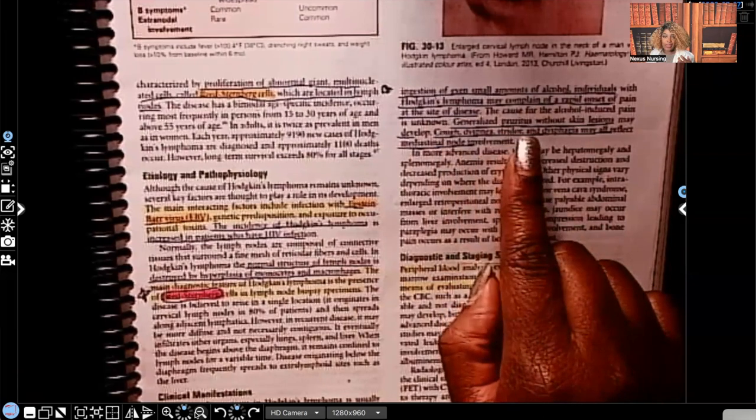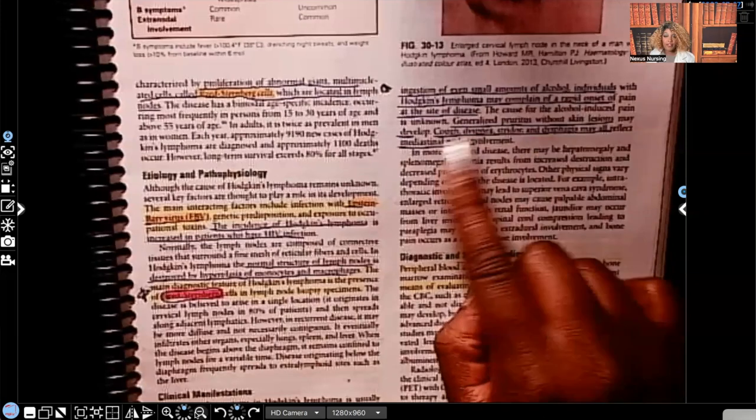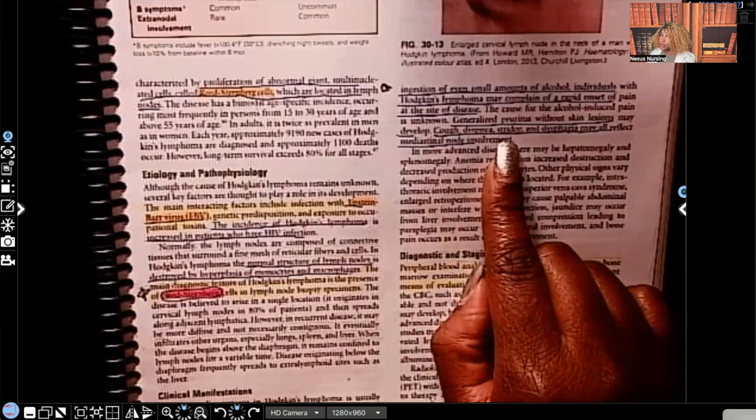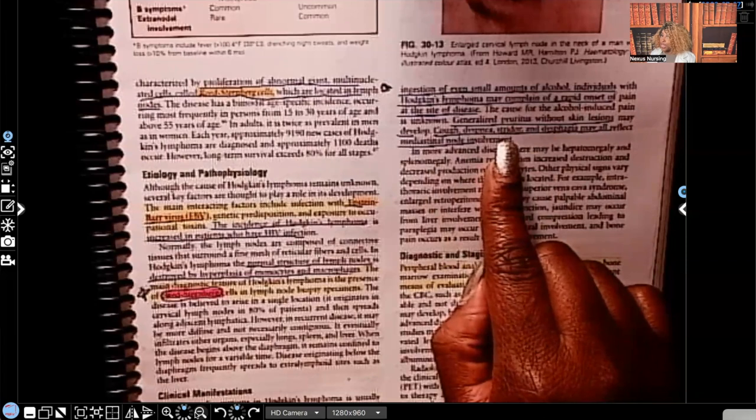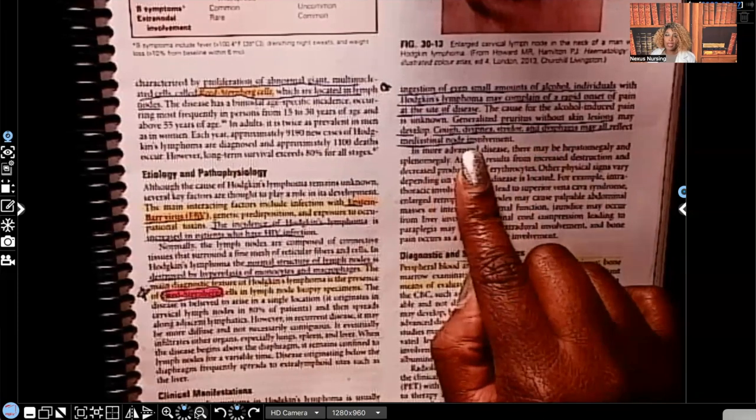Generalized pruritus, that's itching. Generalized pruritus without skin lesions may develop. Cough, dyspnea, stridor. By the way guys, stridor is a medical emergency. Stridor is the sound of air trying to get through an obstructed airway. Cough, dyspnea, stridor, dysphagia may all reflect mediastinal node involvement.